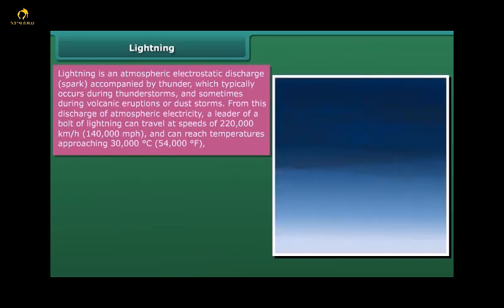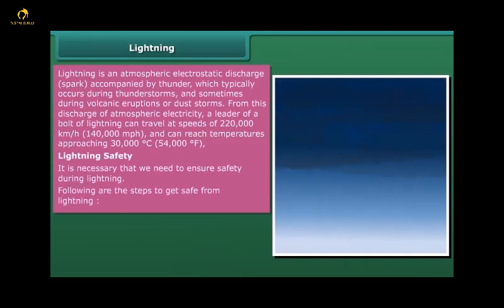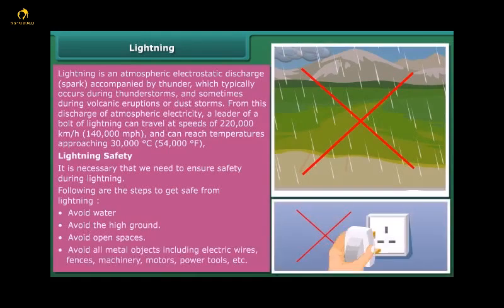Lightning safety: It is necessary that we need to ensure safety during lightning. Following are the steps to get safe from lightning: Avoid water. Avoid the high ground. Avoid open spaces. Avoid all metal objects including electric wires, fences, machinery, motors, power tools, etc.